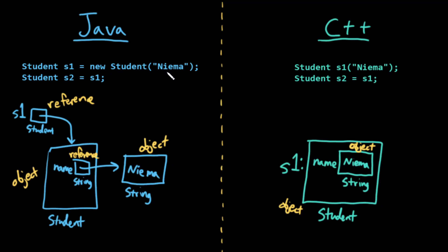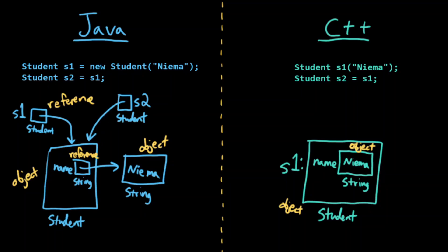Let's go back to the Java example and run the second line: student S2 equals S1. In Java, what this does is create a new reference called S2 of type student, and it's saying whatever object S1 is referring to, S2 should refer to that same object. So S1 and S2 are both referring to the exact same object in memory. If I modify this object through S1, S2 will be updated as well.